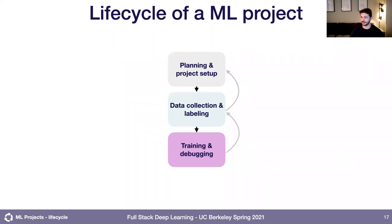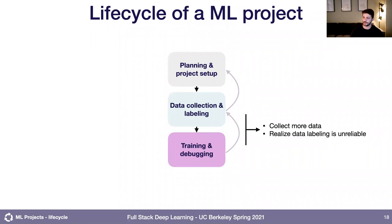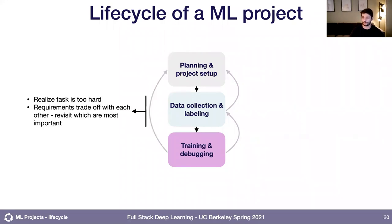Training and debugging can loop back into the data collection phase — for example, if your model is overfitting and you need more data, or if your data labeling process is unreliable and your labels are inconsistent. You can also loop all the way back to the planning and project setup phase if the task itself was too hard to begin with, or if some of the requirements you specified trade off with each other — for example, accuracy often trades off with latency, so a model may need to be too large to run in real time while meeting accuracy requirements.